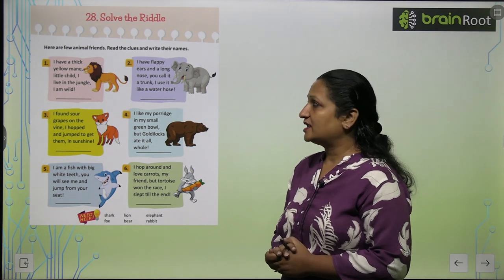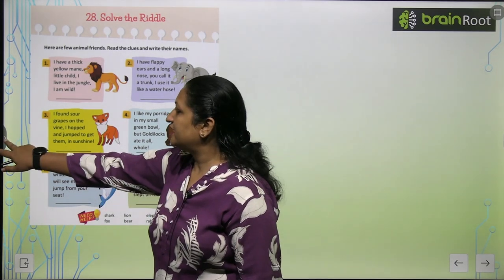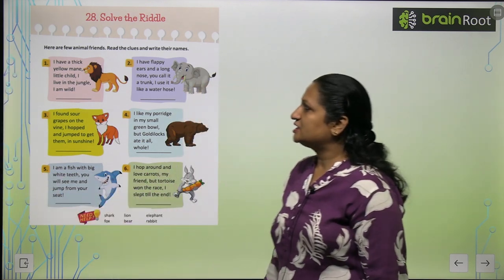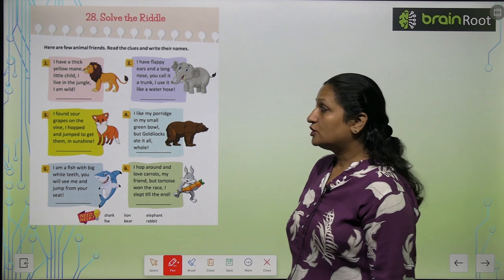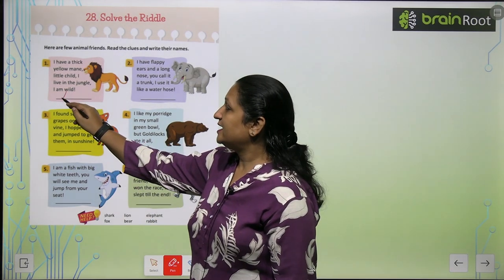See the first one. I have a thick yellow mane. Little child. I live in a jungle. I am wild. Toh ye kaun sa animal hai? Ye hai lion.